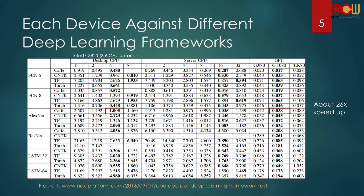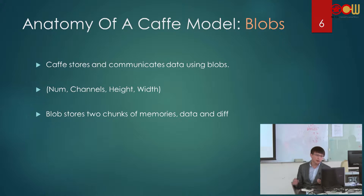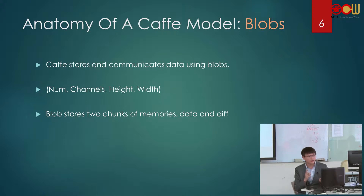This gives us a conclusion: if we really want to do deep neural networks, we have to buy an expensive GPU. Now, if we want to use or build a Caffe model, there are three concepts we have to know. The first concept is Blobs. Caffe stores and communicates data using blobs.